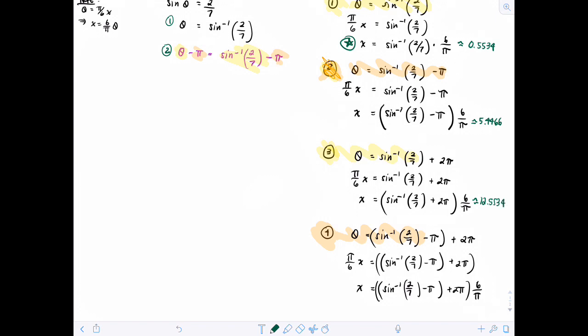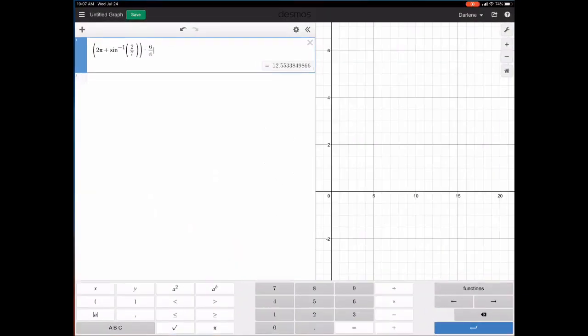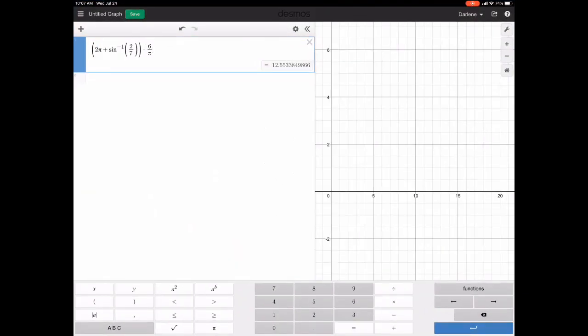Okay, and the last one, we'll go ahead and do the revolution of number 2. So here I'm going to change this to pi minus that, maybe do an extra parenthesis because that would be the first one, and then plus 2 pi, and we get 17.4466.